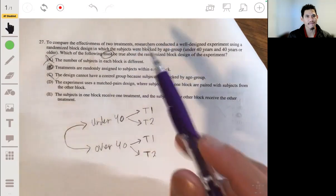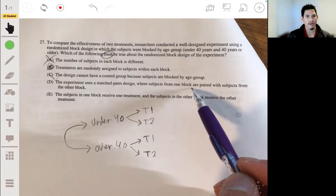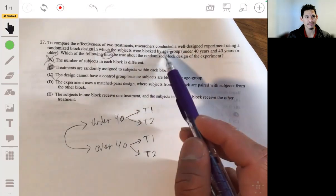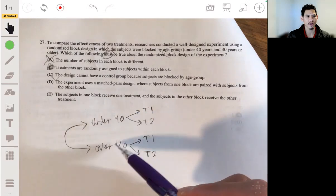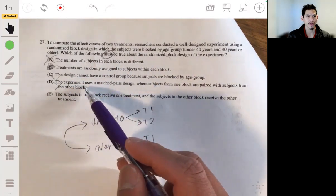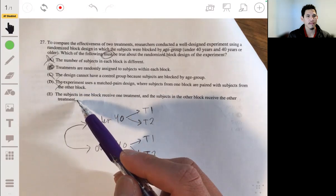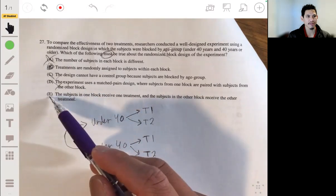The experiment uses the matched paired design where subjects from one block are paired with subjects from the other block. No, it's not, because they're blocked by age group. You have the 40 year olds, or you have the under 40 separated from the over 40. So they're not going to be paired up with each other.